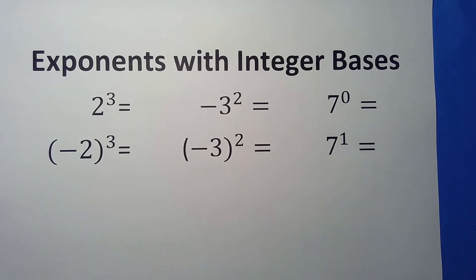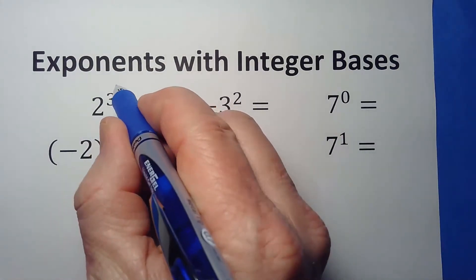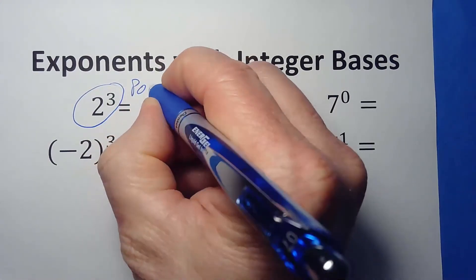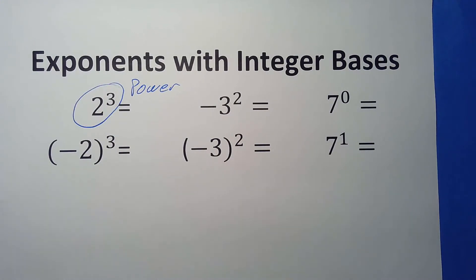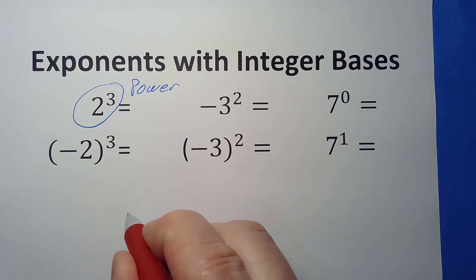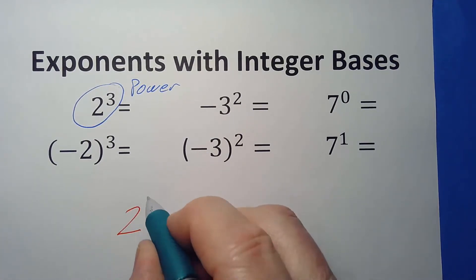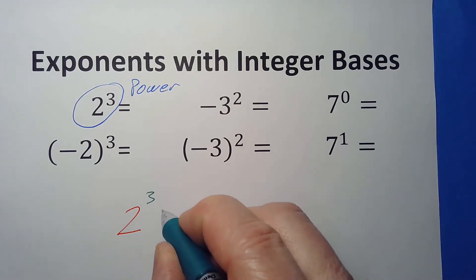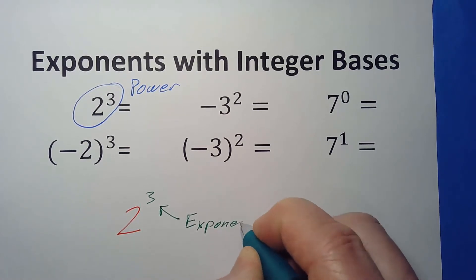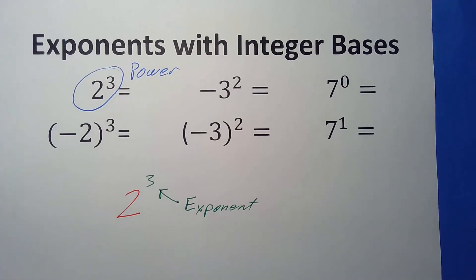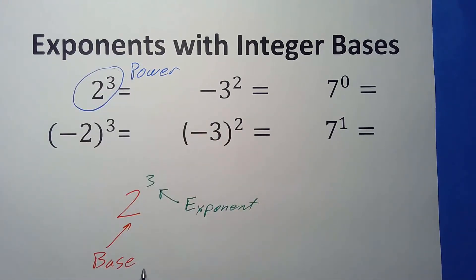We'll also talk about what happens when you have an exponent of zero or an exponent of one. First, let's get our definitions straight. When you put a base and an exponent together, we call that a power. The number at the bottom is the base, the number at the top is the exponent. The exponent tells us how many times we're multiplying, and the base tells us what we're multiplying.